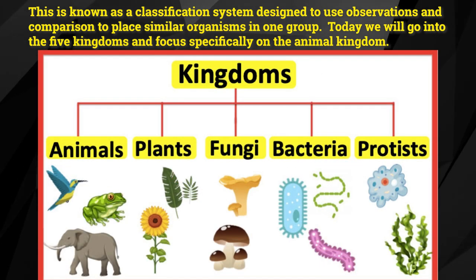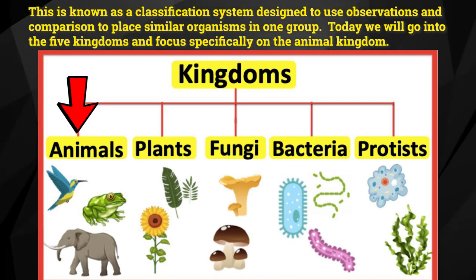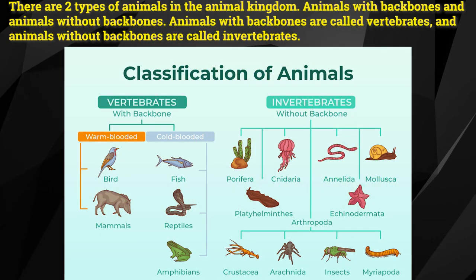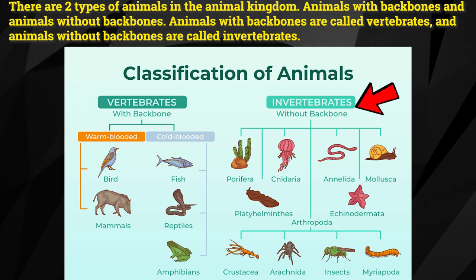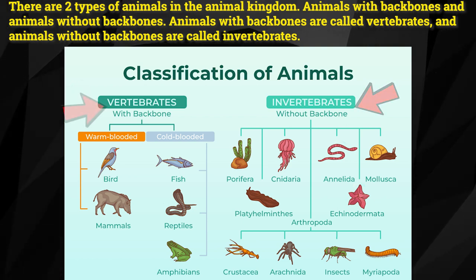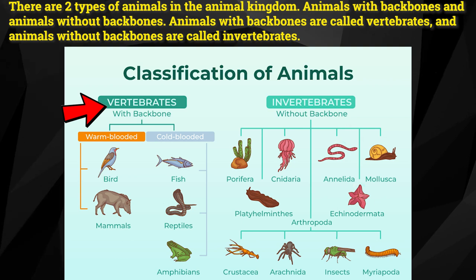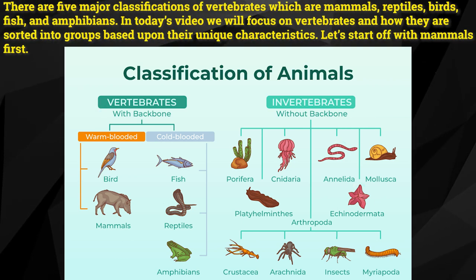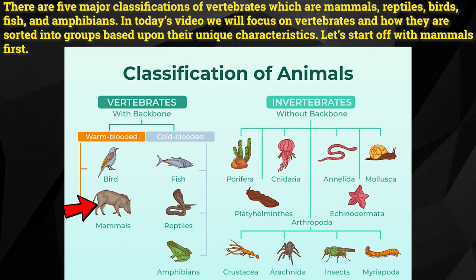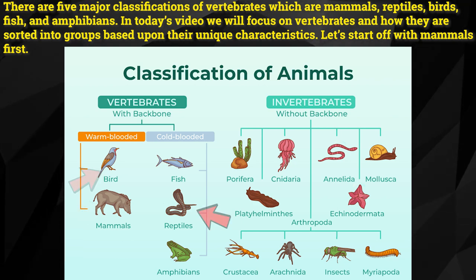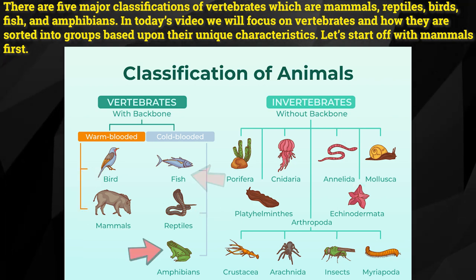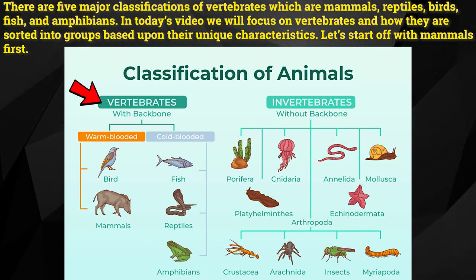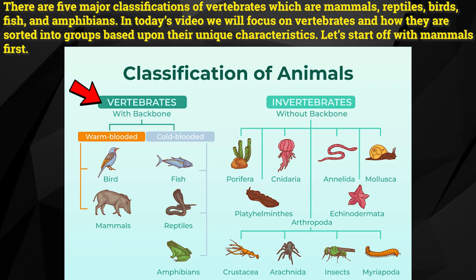Today we will go into the five kingdoms and focus specifically on the animal kingdom. There are two types of animals in the animal kingdom: animals with backbones and animals without backbones. Animals with backbones are called vertebrates and animals without backbones are called invertebrates. There are five major classifications of vertebrates: mammals, reptiles, birds, fish, and amphibians. In today's video we will focus on vertebrates and how they are sorted into groups based upon their unique characteristics.